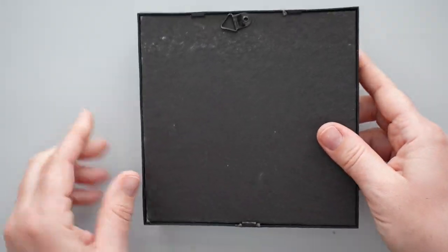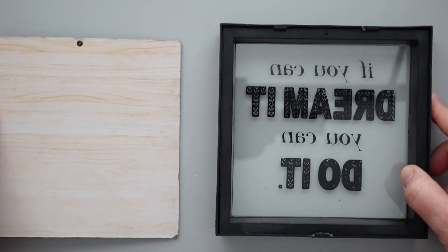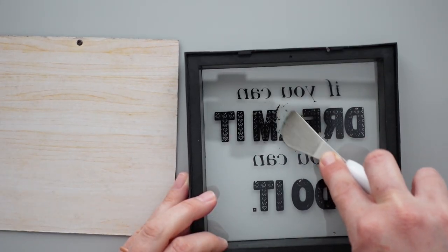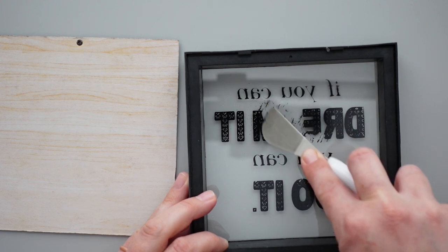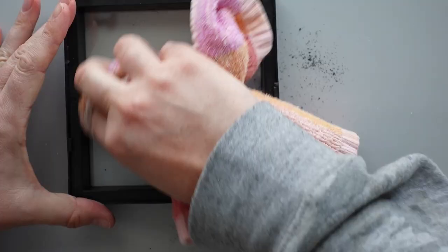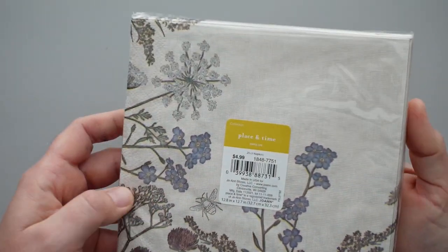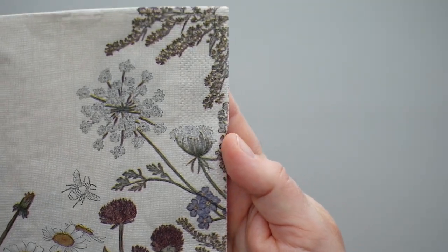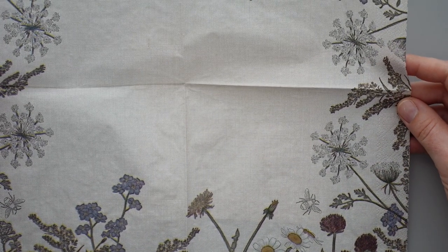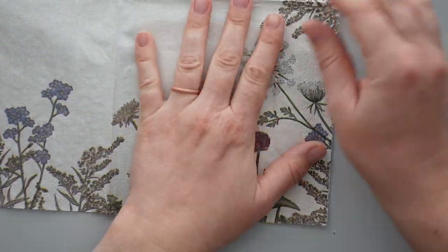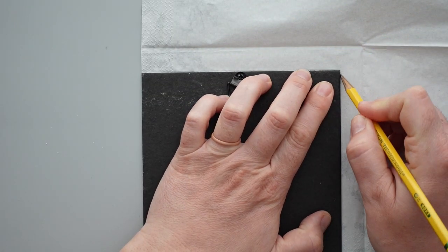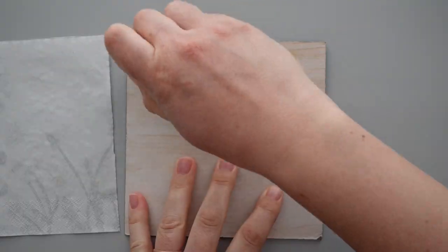For the first DIY, I started with this frame from Dollar Tree. After removing the backing from the frame, I used my Cricut spatula to scrape the text off the glass and remove the residue with a towel. For the background of the sign, I used a napkin out of this package from Joanne. I unfolded the napkin and traced around the backing I removed from the frame earlier. After cutting the napkin to fit, I used a glue stick to attach it to the backing.